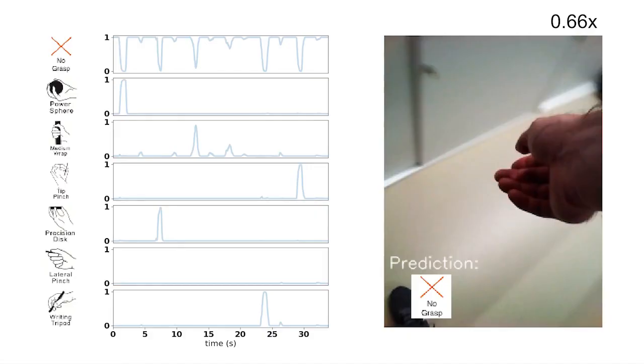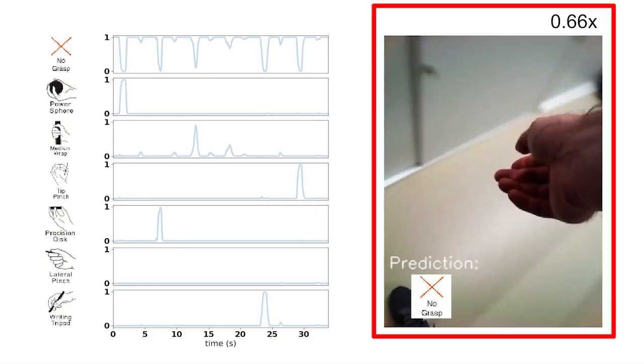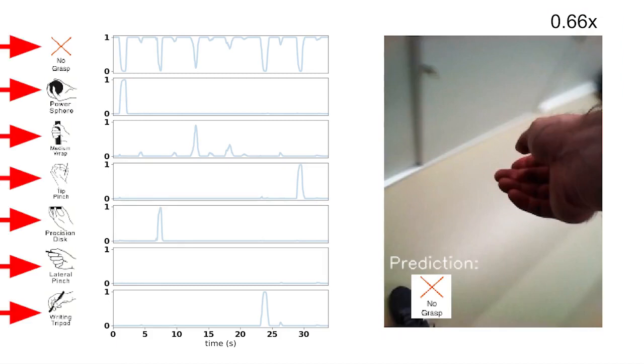We now show our system in action. On the right side we display the sample video recorded as the user grasps a series of objects. On the left side we plot the class probabilities for the seven grasp classes, which includes a separate no-grasp class.